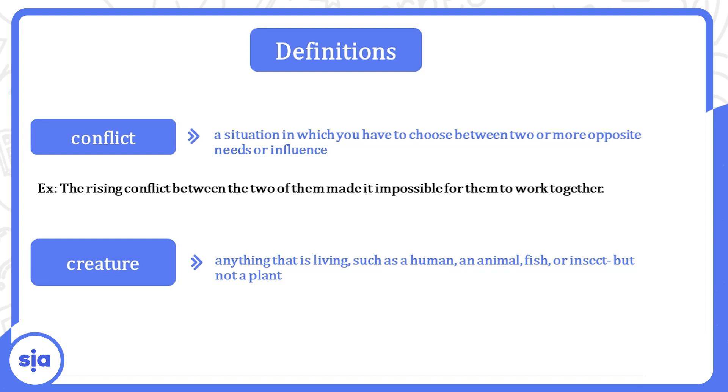Creature معناها مخلوق. Anything that is living. أي حاجة عيشة. Such as humans, زي الإنسان. An animal, الحيوان. Fish, السمك. Or insect, أو الحشرات. But not a plant. لكن النباتات مش بيتقال عليها creatures. Dinosaurs were living creatures that went extinct. الديناسورات كانت مخلوقات عيشة ودلوقتي بقيت منقرضة.